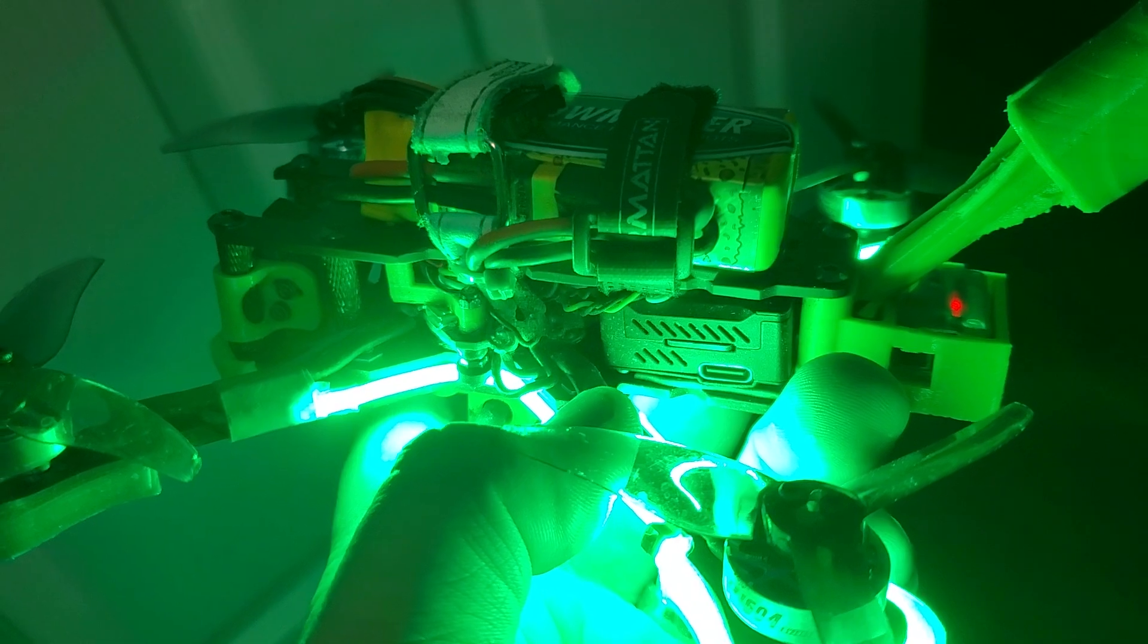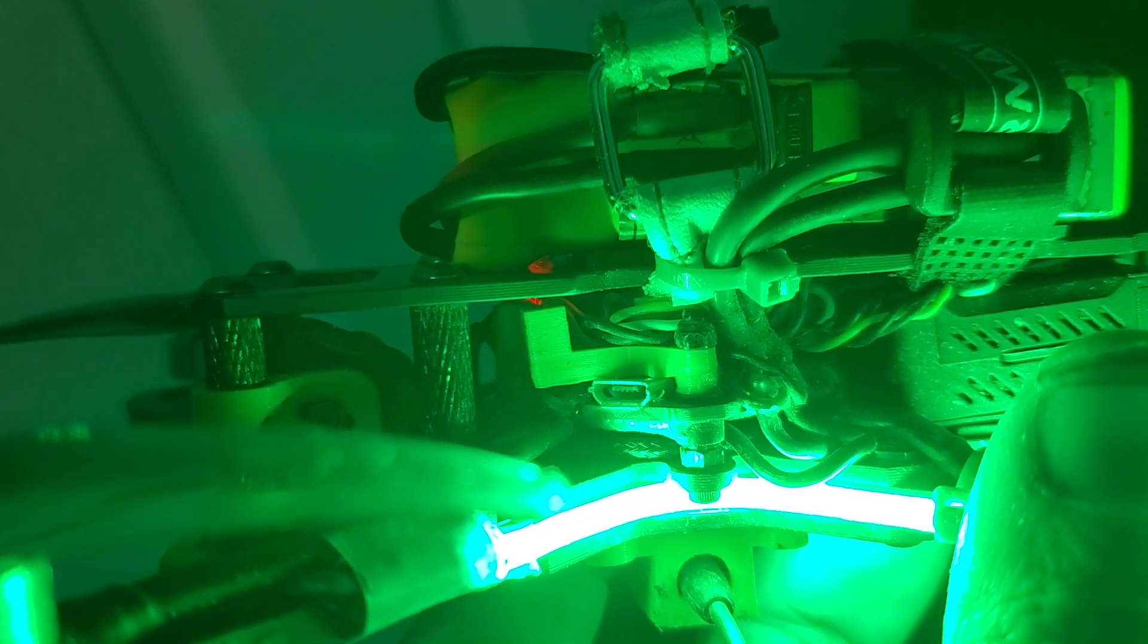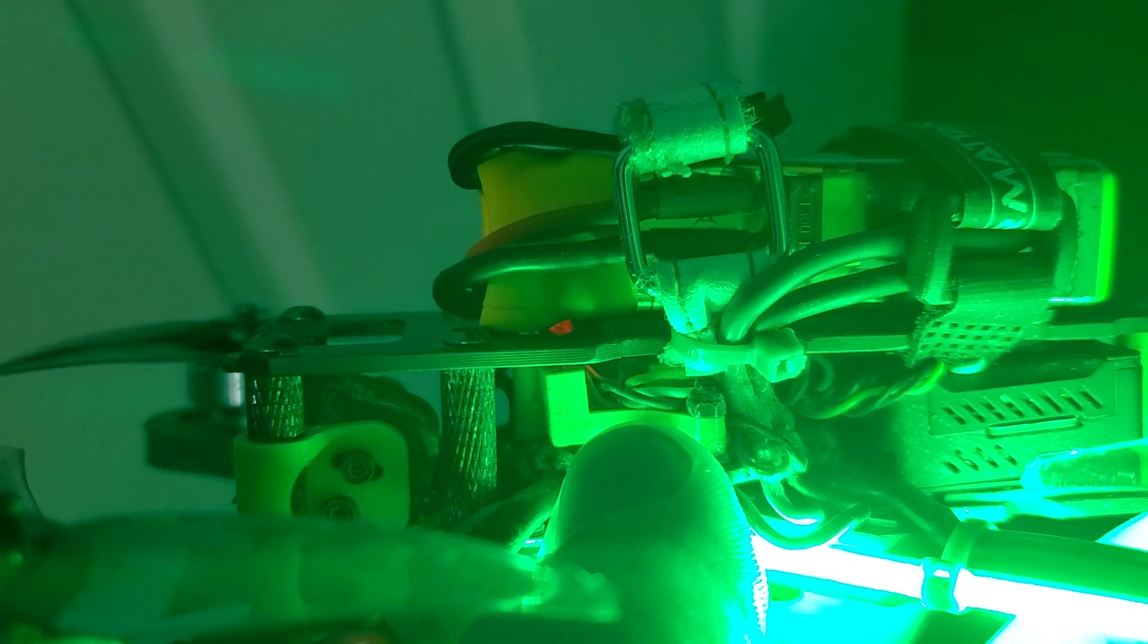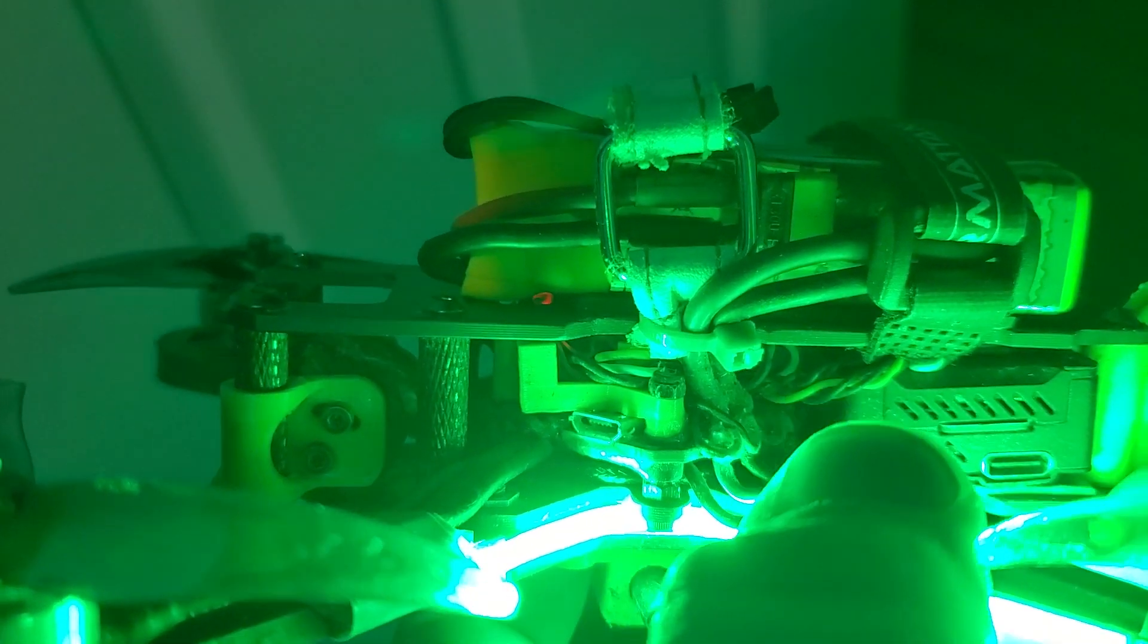I am running a receiver tray right here. It's got a Nano RX in it. It's mounted right on top of my all-in-one. If you're running a 20x20 you probably don't have room for that.